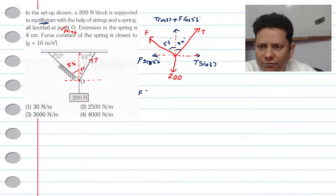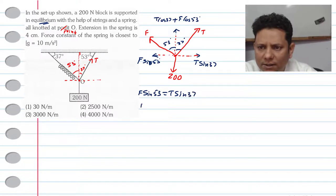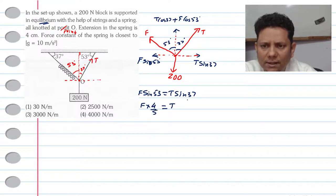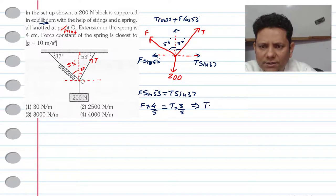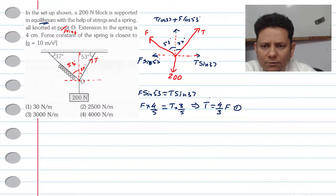For horizontal equilibrium, F sin 53° is equal to T sin 37°. Writing out F sin 53° = T sin 37°: using values 3/5 and 4/5, the 5s cancel, which implies tension T = (4/3)F. This is equation number 1, where we can replace the tension value with (4/3)F.